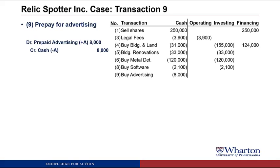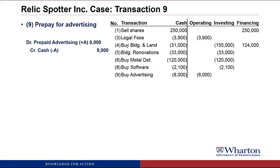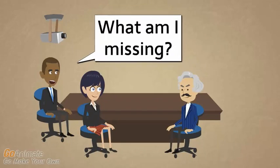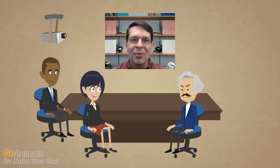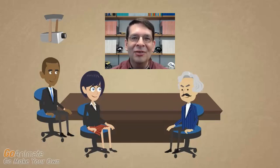Transaction number nine: Relic Spotter paid $8,000 cash for advertising over the next year. The answer is operating. The advertising we're prepaying is not more than a year, so by our general rule of thumb we call this an operating activity. The one-year rule of thumb works well: if an expenditure benefits you for more than a year, we tend to call it investing; if less than a year, we call it operating.